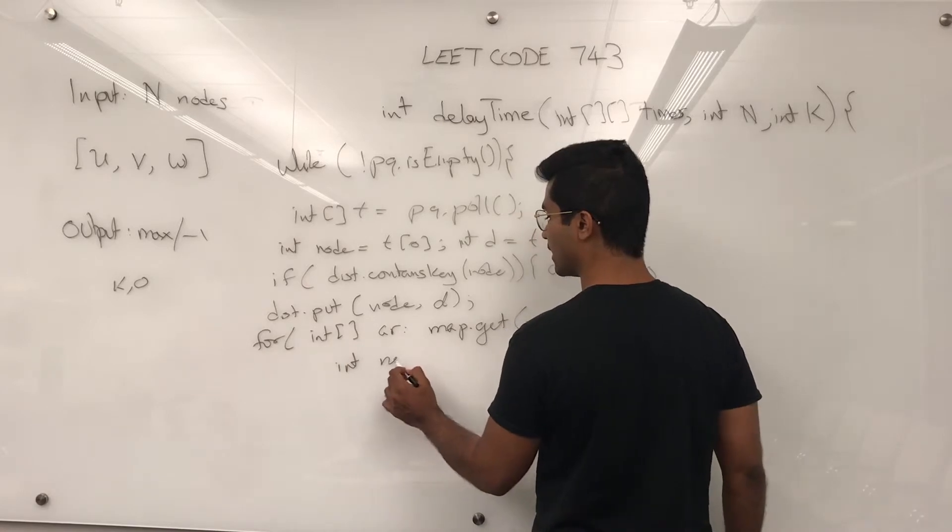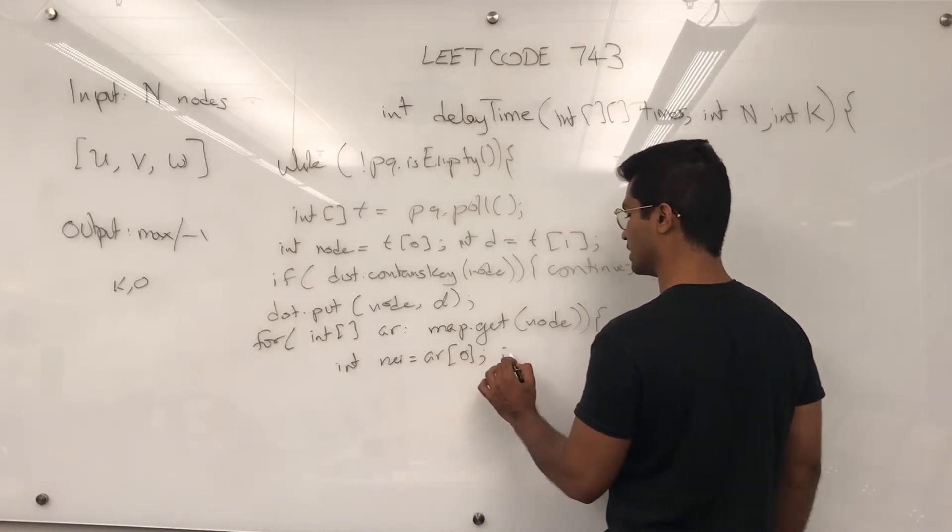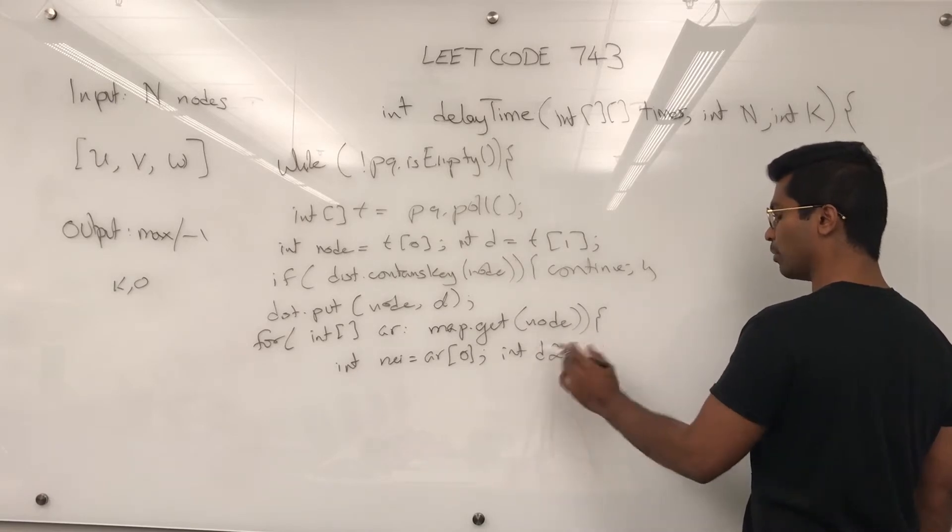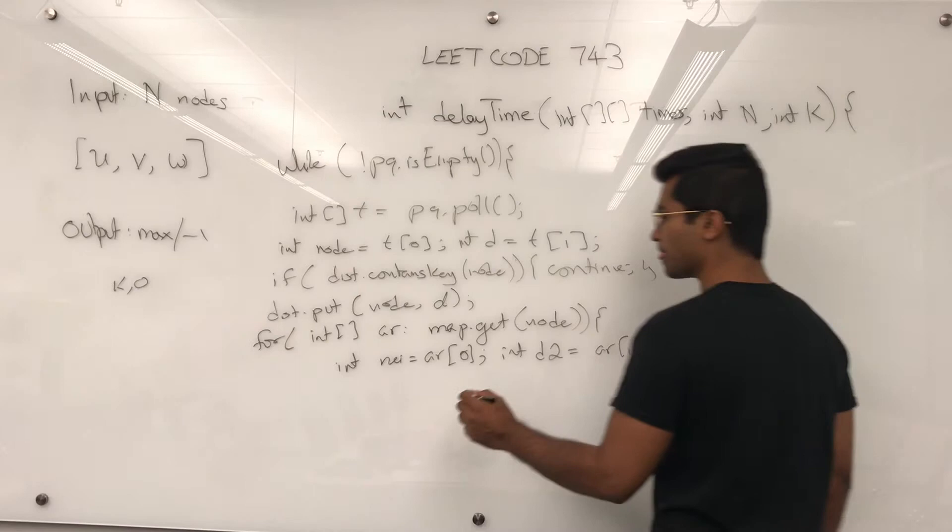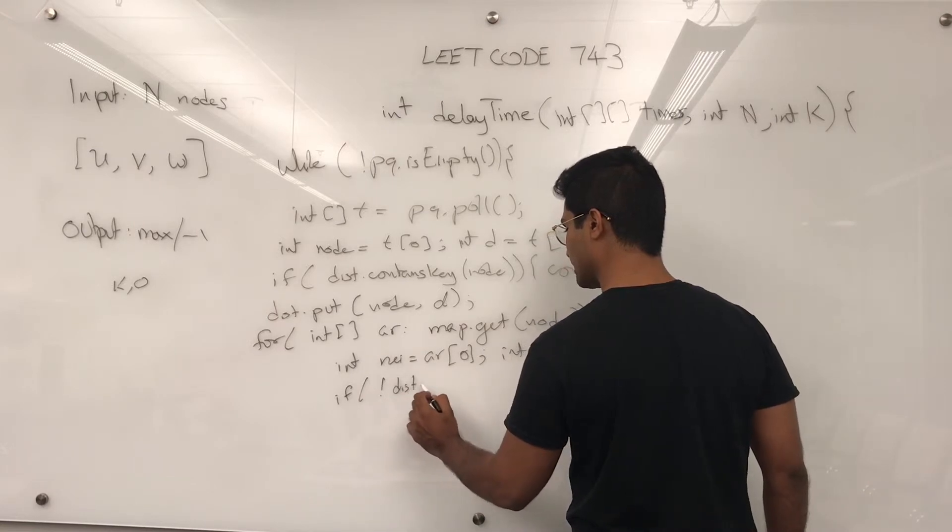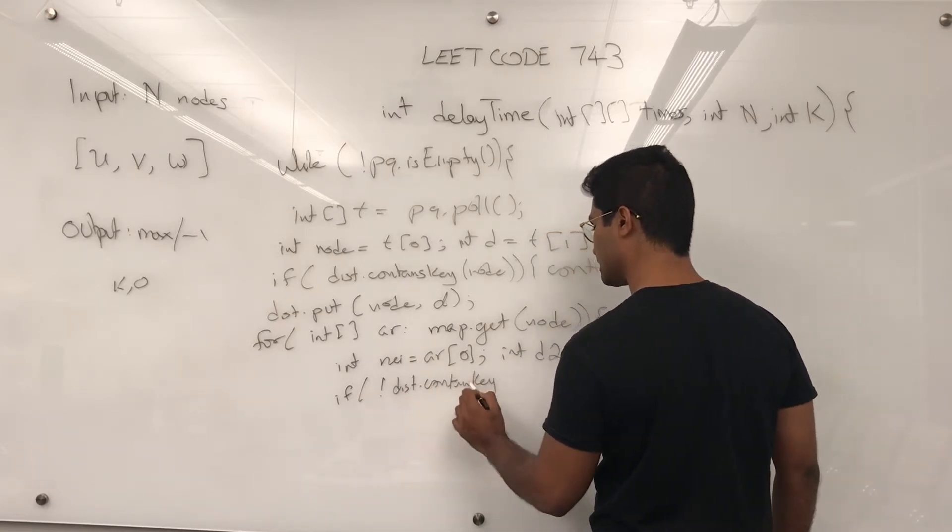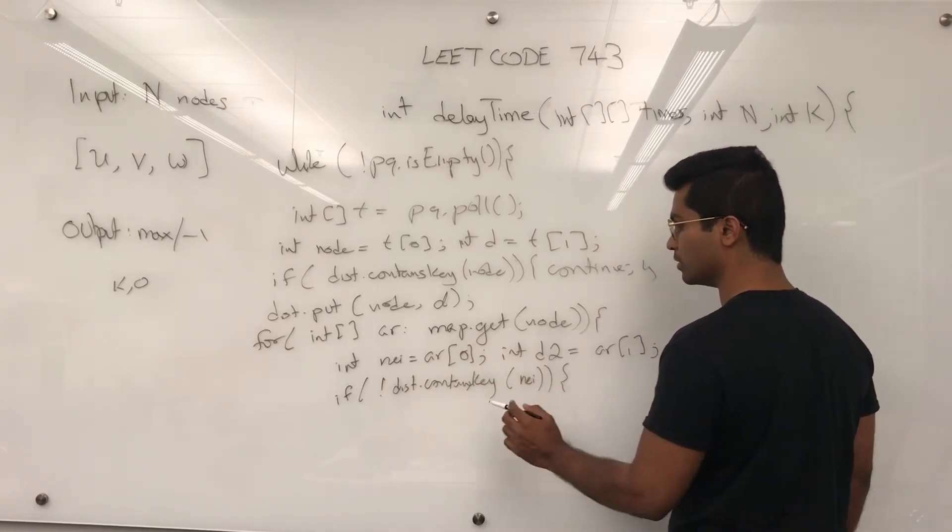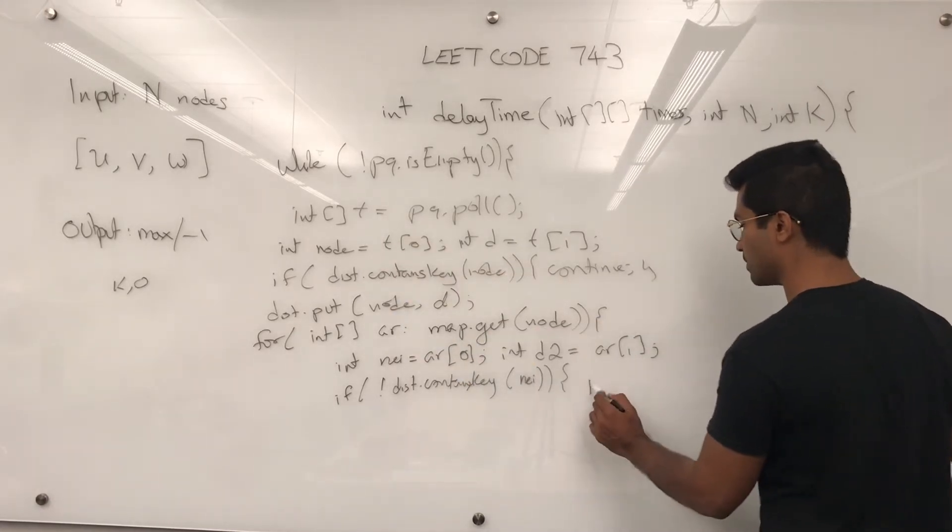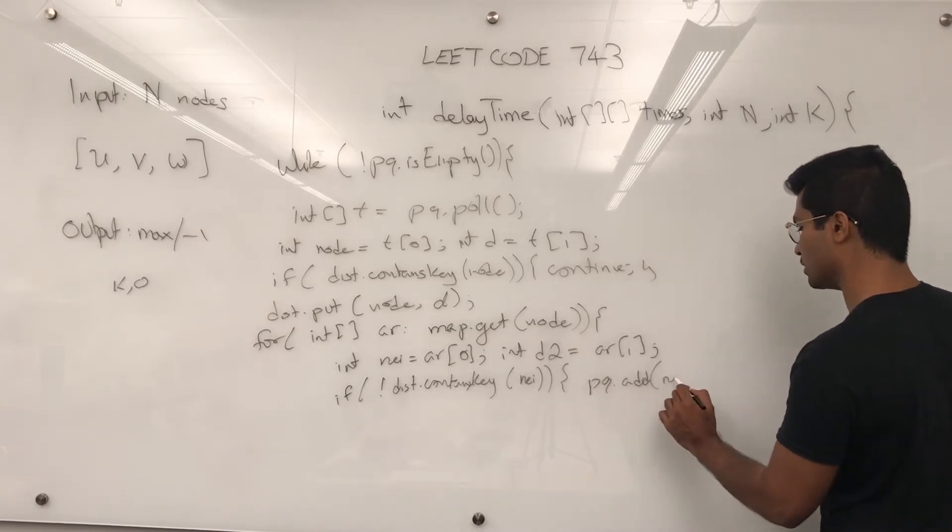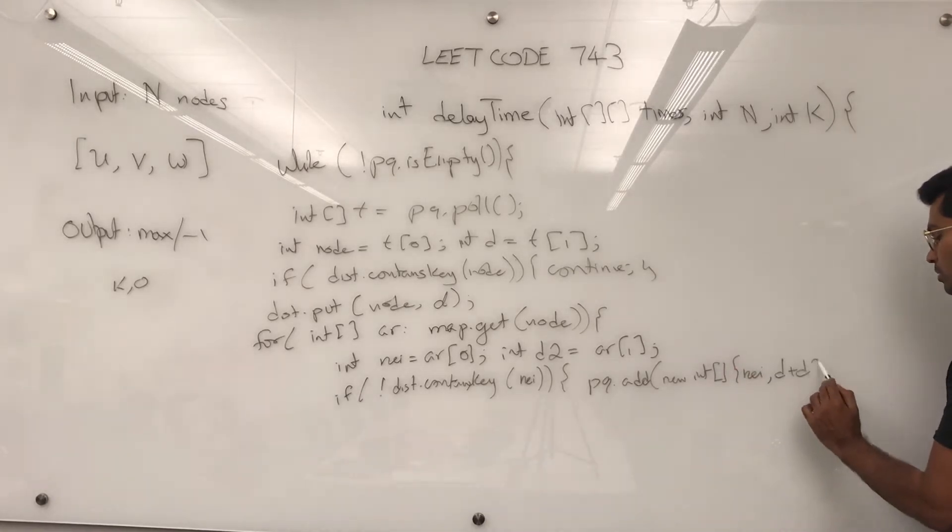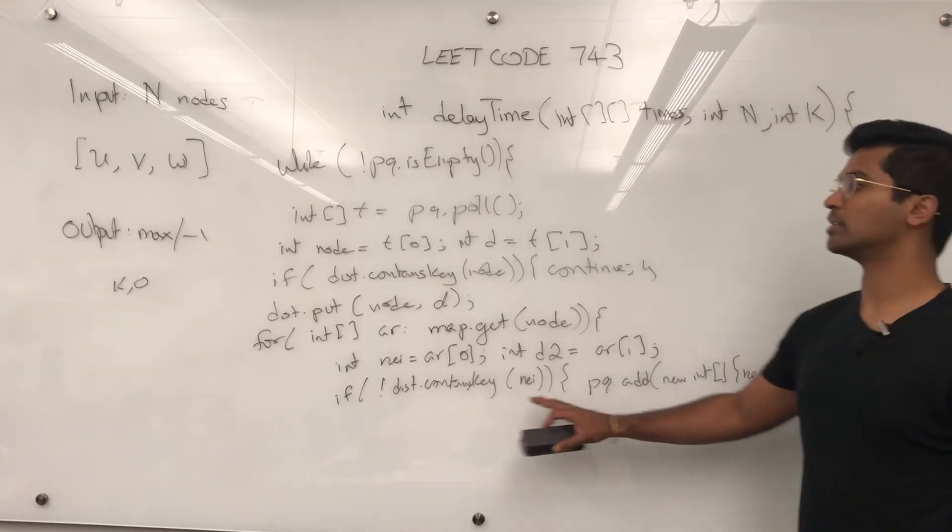this is going to be like a NEI for neighbor, ar of 0. And then int d2 for distance to that neighbor from node that we just popped out, pulled. Or rather, it's going to be ar of 1. Then, if distance doesn't contain this neighbor, then what we're going to do is we are going to add this guy into the priority queue. we're going to say pq dot add new int, add. We're going to put neighbor in there. And we're going to put d plus d2 in there. Because we want to keep track of the distance from the original k node.